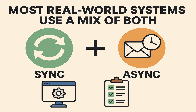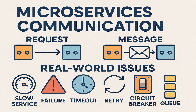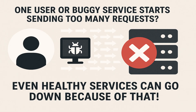So that was all about how microservices talk to each other — by waiting for a response or by just sending a message and moving on. But communication is just one piece of the puzzle. What if one user or a buggy service starts sending too many requests, like thousands of requests per second? Even a healthy service can go down because of that.